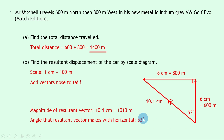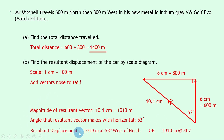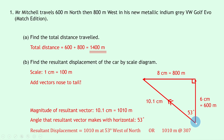The angle alone isn't a direction — we use it to state direction using either compass points or bearings. The resultant displacement is 1010 meters at 53 degrees west of north, because from the starting point we've moved 53 degrees from north toward west. As a bearing, we start at north (000) and go clockwise to the resultant vector, which is 360 minus 53, giving a bearing of 307.